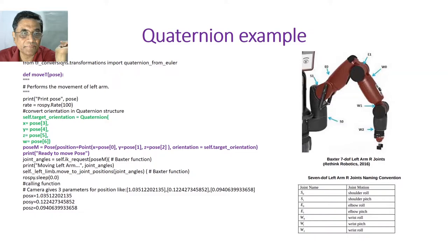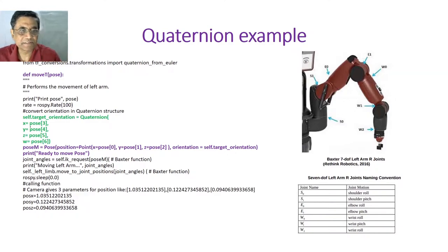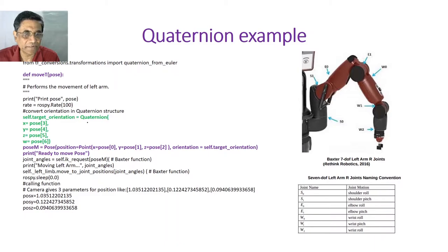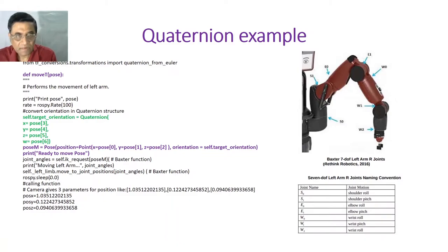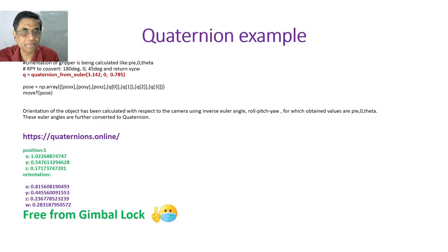This is a function for conversion from Euler to Quaternion. Say we want to actually move Baxter's left hand. In typical code we are selecting rate, and then this is a function — self.target_orientation — which converts to Quaternion. These are the Quaternion X, Y, Z, and W parameters. To get pose you need position and orientation: position is gotten from the camera and orientation from the Quaternion.